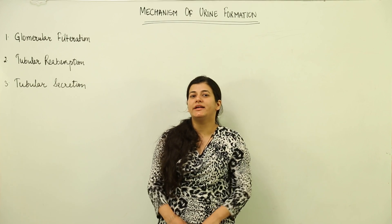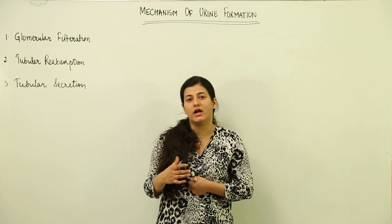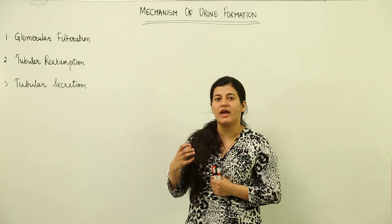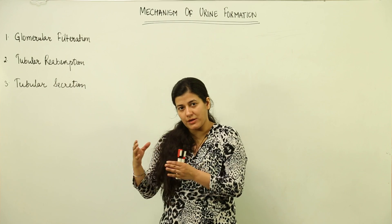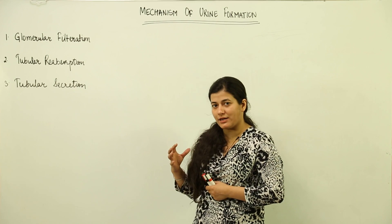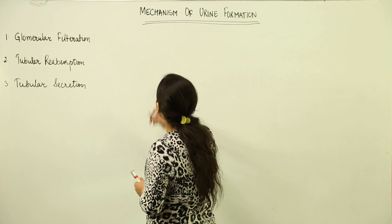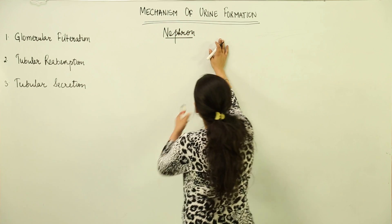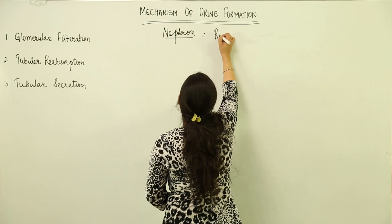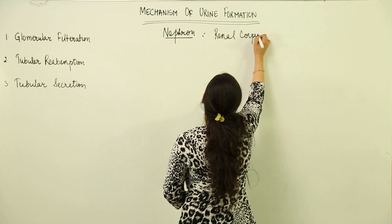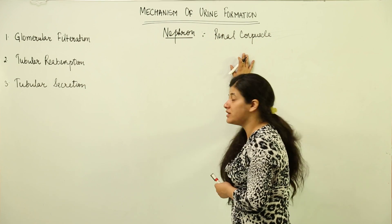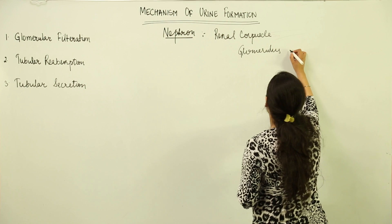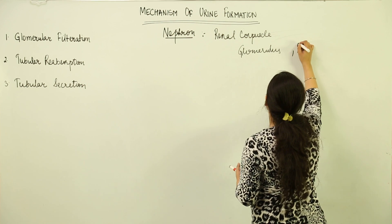Let us understand the mechanism and processes involved in the formation of urine. We will see the broader picture of the three basic processes. The site of urine formation is inside the kidney, specifically the nephron. From your understanding of nephron structure, you know there is a renal corpuscle containing a tuft of capillaries known as the glomerulus, surrounded by the nephron's Bowman's capsule.